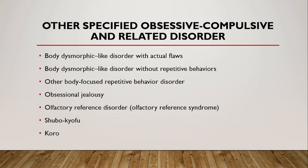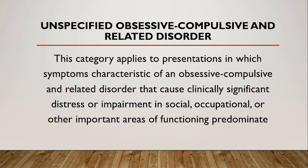Shubo-Kyofu is a variant of Taijin Kyofusho, a culture-specific psychiatric disorder that is similar to body dysmorphic disorder and is characterized by excessive fear of having a bodily deformity. Next is Koro, a related syndrome — an episode of sudden and intense anxiety that the penis in males or the vulva in females will recede into the body, possibly leading to death.